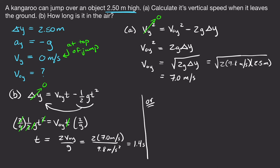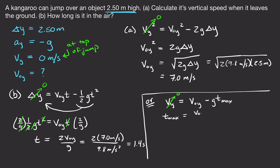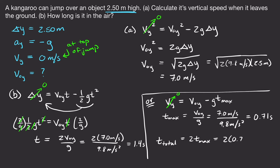Alternatively, at the top vy is zero, so using vy equals v-naught-y minus g times t gives time to max height as v-naught-y over g: 7 over 9.8 equals 0.71 seconds. Since the kangaroo spends equal time going up and coming down, total time is 2 times 0.71 equals 1.4 seconds — confirming the earlier result.